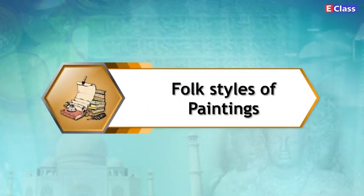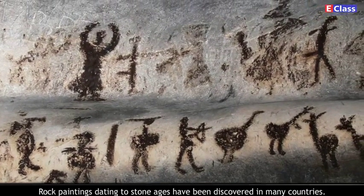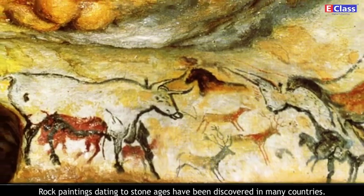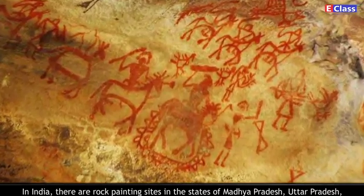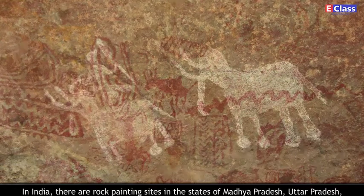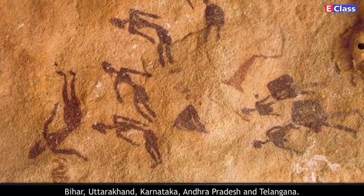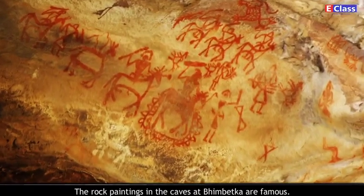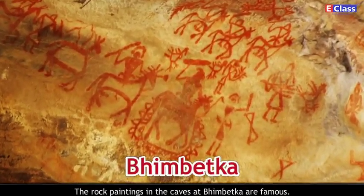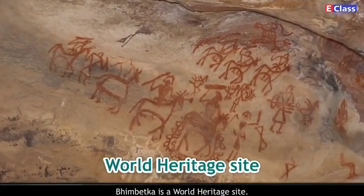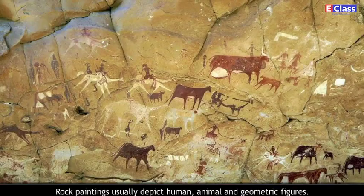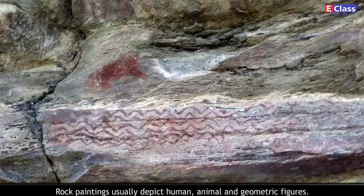Folk styles of paintings. Rock paintings dating to the Stone Ages have been discovered in many countries. In India, there are rock painting sites in the states of Madhya Pradesh, Uttar Pradesh, Bihar, Uttarkhand, Karnataka, Andhra Pradesh and Telangana. The rock paintings in the caves at Bhimbetka are famous — Bhimbetka is a World Heritage Site. Rock paintings usually depict human, animal and geometric figures.